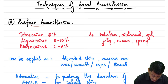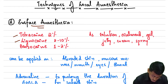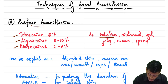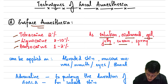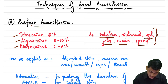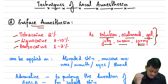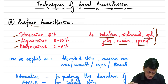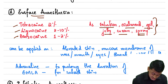For surface anesthesia, we use tetracaine 2%, lignocaine 2 to 10%, and benzocaine 1 to 2%. These can be used as a solution, ointment, gel, jelly, cream, or spray.